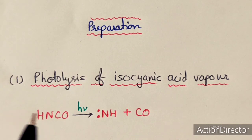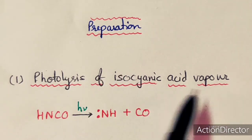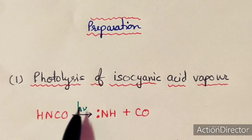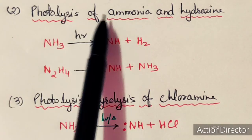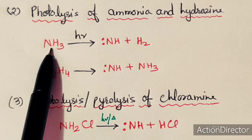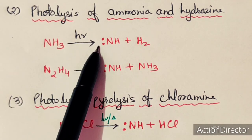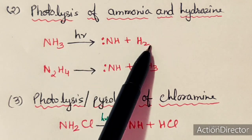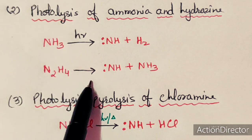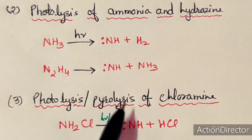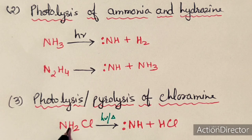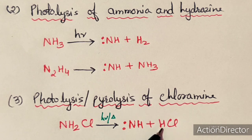The first method is the photolysis of isocyanic acid vapor. In the presence of light, it can dissociate to form imine radical. The second method is the photolysis of ammonia and hydrogen — ammonia in the presence of sunlight can form imine free radical and H₂, while hydrogen in the presence of light can form imine and ammonia. The third method is the photolysis or pyrolysis of chloramine; heating or irradiating chloramine forms the imine free radical and HCl.